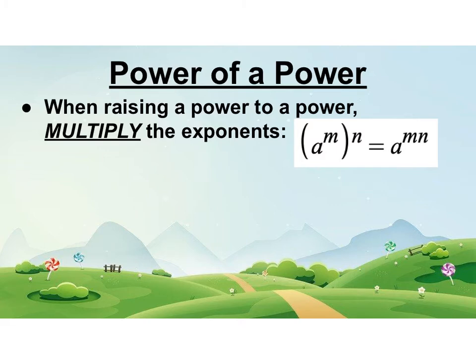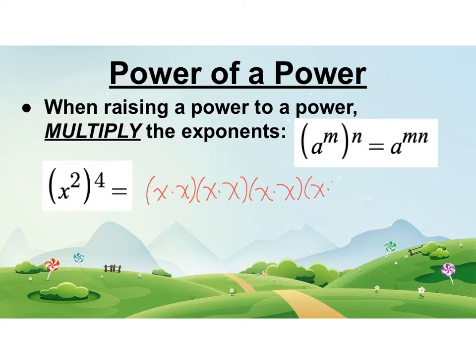Power of a power. That means you have an exponent raised to another exponent. So when raising a power to a power you multiply the exponents. You take those two exponents multiply them together. So here we have x squared to the 4th. Let's think about what that looks like. That's x times x 4 times. And then I have 8 x's so it'd be x to the 8. So you multiply the two exponents.